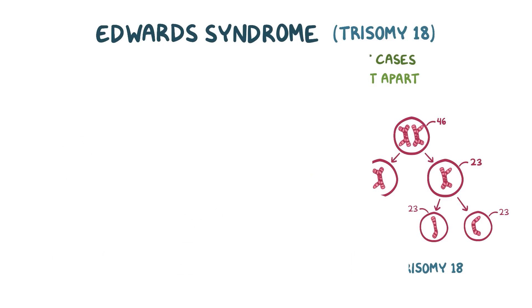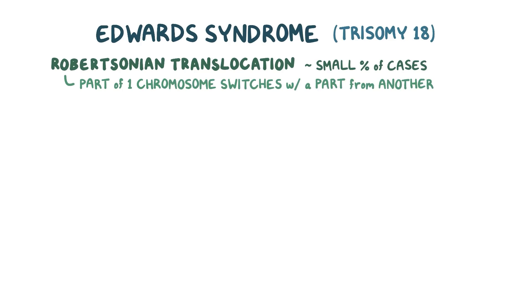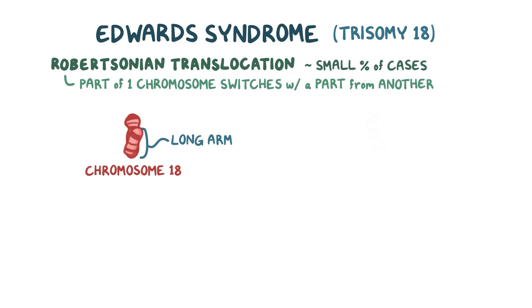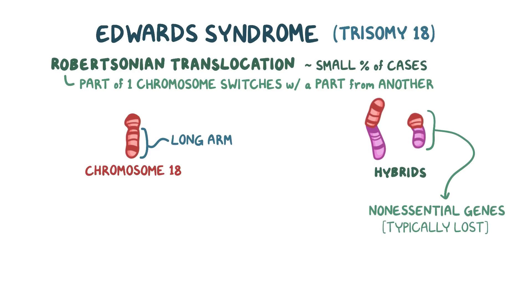Apart from non-disjunction, Robertsonian translocation accounts for a small percentage of trisomy 18 cases. Translocation means that a part of one chromosome switches places with a part from another chromosome. One of these needs to be chromosome 18, but the other can be any old chromosome. In this example, the long arm of chromosome 18 translocates over to chromosome 14, and you end up with a hybrid with both long arms and one hybrid with both short arms. The one with the short arms carries non-essential genes and typically is lost by the end of meiosis.